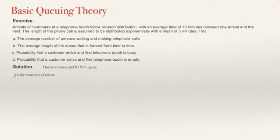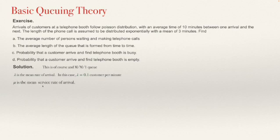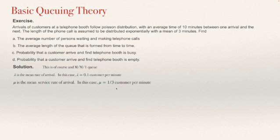We are going to use these symbols. Lambda is the mean rate of arrival. The average time is 10 minutes between one arrival and the other, so lambda equals 0.1 customers per minute. We symbolize mu as the mean service rate. The mean time the customer spends on the phone call is 3 minutes, so mu equals 1/3 customers per minute. We have lambda, we have mu, and we have a set of formulas. Some of these queuing theory formulas are intuitive; some others need a proof, which I will cover in another video.